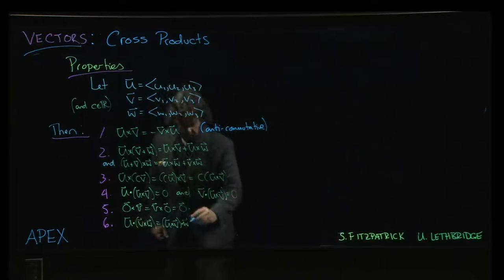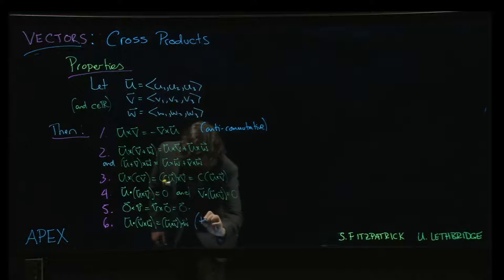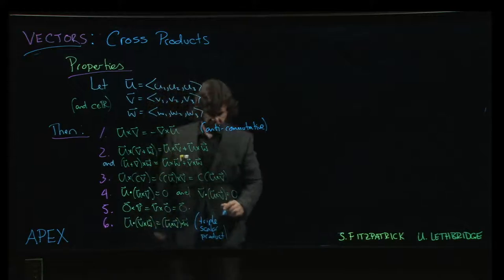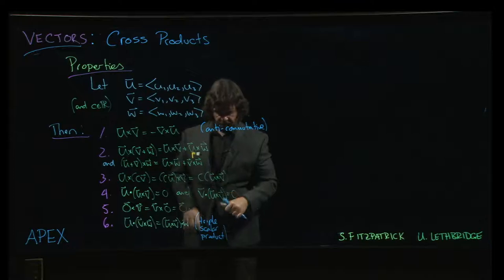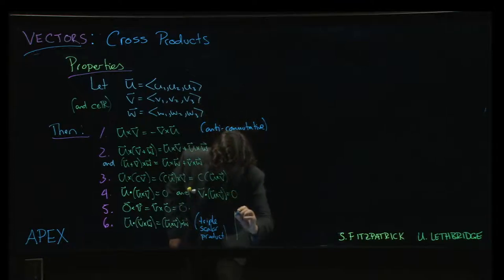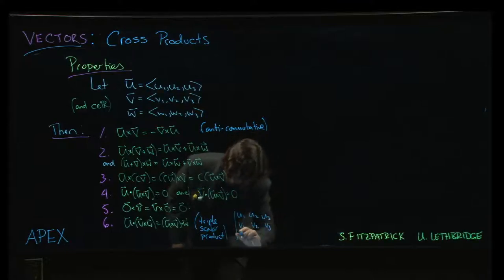This last one here is known as the triple scalar product. And either of these two orders, what it ends up giving you for those who have seen it, you get a three by three determinant. It looks like U1, U2, U3, V1, V2, V3, W1, W2,